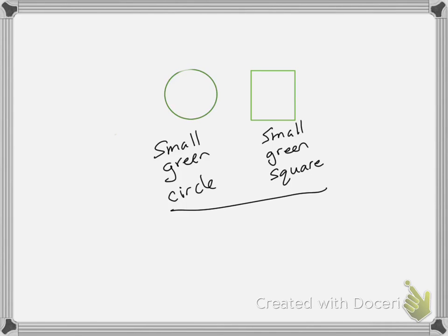So geometric pieces can be similar in many ways. They can be similar in color, similar in shape, or similar in size. Or they can be different. They could be a different shape, a different size, or a different color.